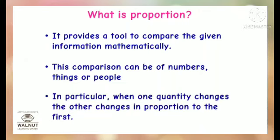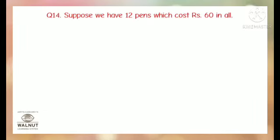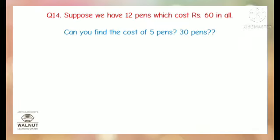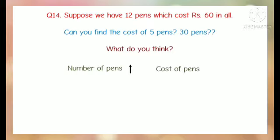In particular, when one quantity changes, the other changes in proportion to the first. Suppose we have 12 pens which cost Rs. 60 in all. Can you find the cost of 5 pens and 30 pens? If the number of pens goes higher, the cost of pens goes higher. If the number of pens goes lower, then cost of pens also goes lower.